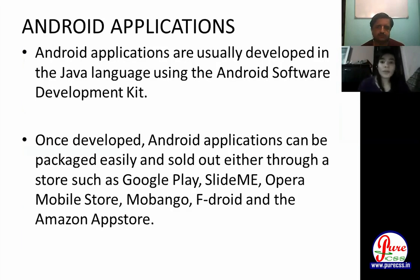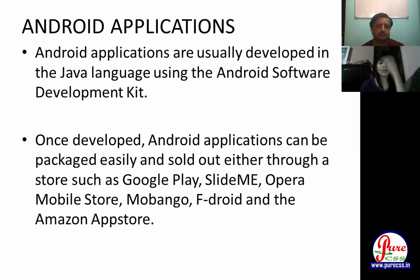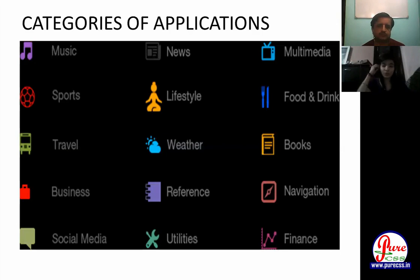Android applications are usually developed in the Java language using the Android Software Development Kit. Once developed, Android applications can be packaged easily and sold through a store such as Google Play. Currently we are using Android Studio for making application programs. After developing your app, you can package and sell it via the Play Store, any Opera Mobile Store, or anywhere you want, and everyone can download it.